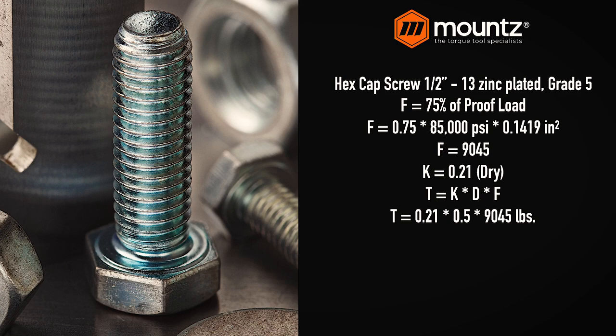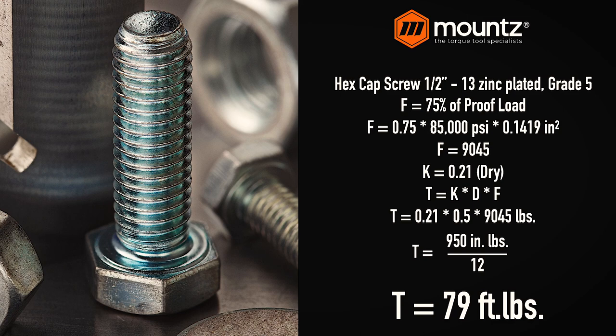We then take our K-nut factor of 0.21 — this is going to be a dry fastener — and we multiply that out with our K-nut factor, our diameter, and our force: 0.21 times 0.5 inches, multiplied by 9,045. This gives us 950 inch-pounds, and if we divide that by 12, we're at roughly 79 foot-pounds of torque. So to generate 9,000 pounds of force, we need roughly 79 foot-pounds of torque.